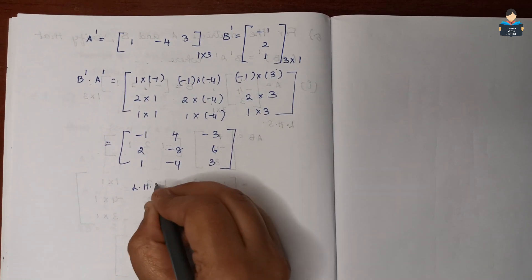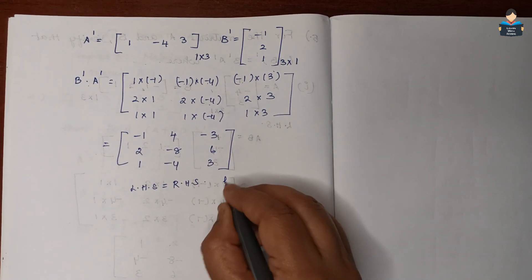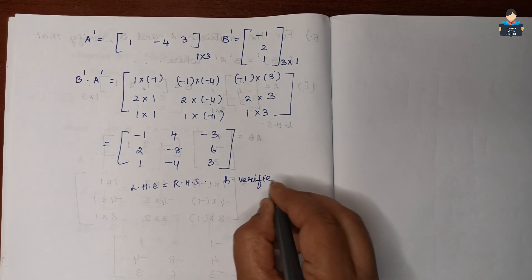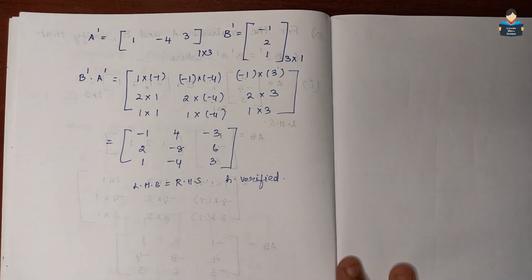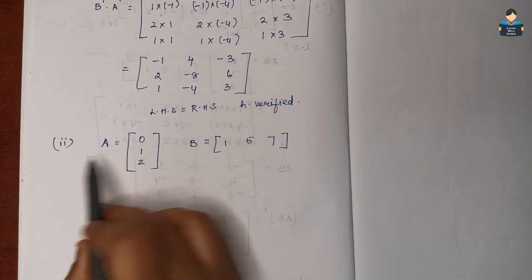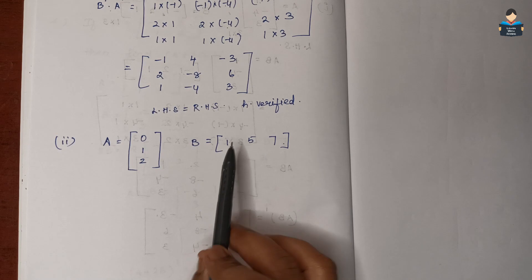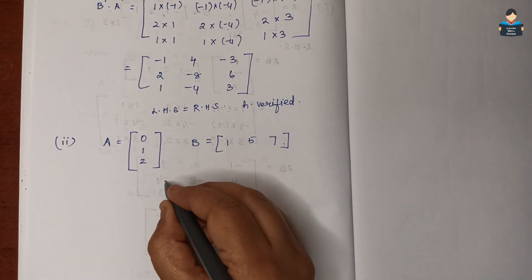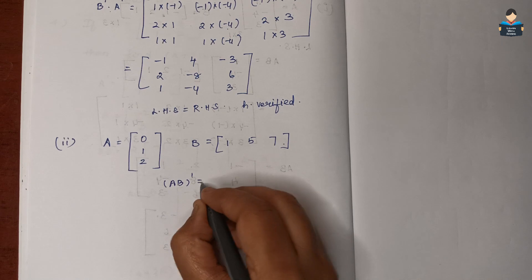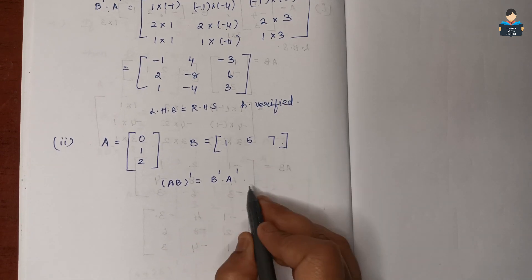LHS is equal to RHS, hence verified. Now we move to the second sub-part. Again we need to prove AB whole transpose = Bᵀ × Aᵀ. We will send LHS again and solve A × B.